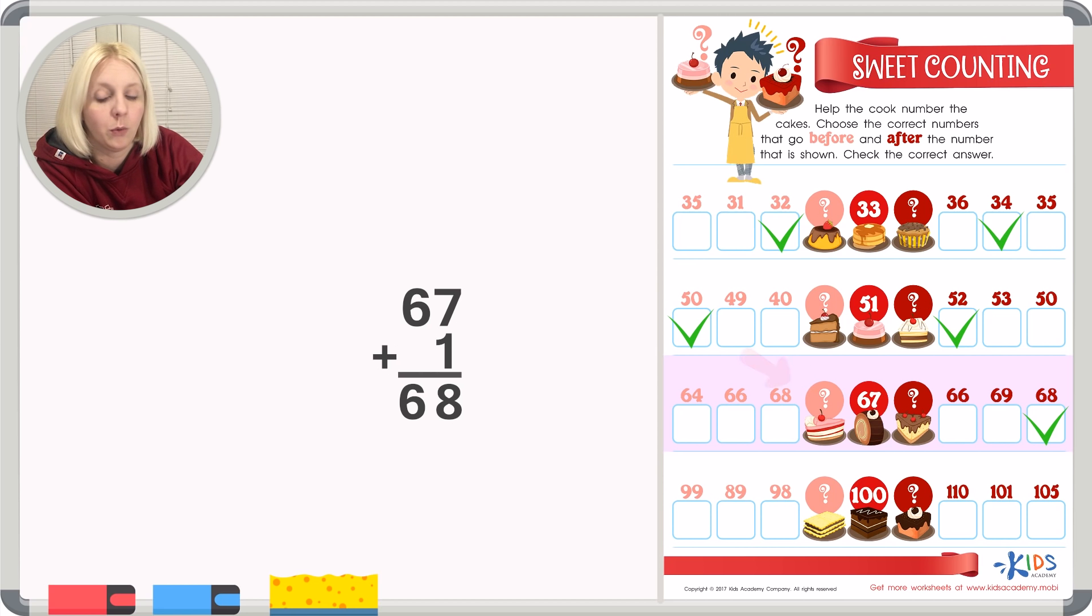And then this one right here, a little cake with the cherry on top. How much is this one? It's one down. So we take 67 minus 1. So what's 7 minus 1? That's 6, right? And then we bring this 6 down. We've got 66. So do we see it? Yep. It's right here. 66.